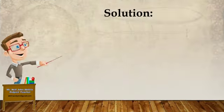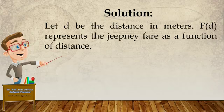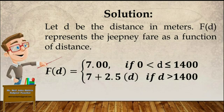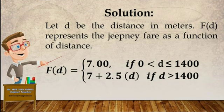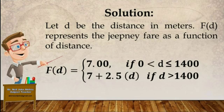A jeepney ride costs 7 pesos for the first 1,000 meters and each additional integer kilometer adds 2.5 pesos to the fare. Using a piecewise function, represent the jeepney fare in terms of the distance d in meters. Let d be the distance in meters and f of d represent the jeepney fare. You will be charged 7 pesos if the distance is less than or equal to 1,000 meters. If the distance is greater than 1,000 meters, you will be charged 7 pesos plus 2.5 pesos for the excess distance. Did you follow me, class?